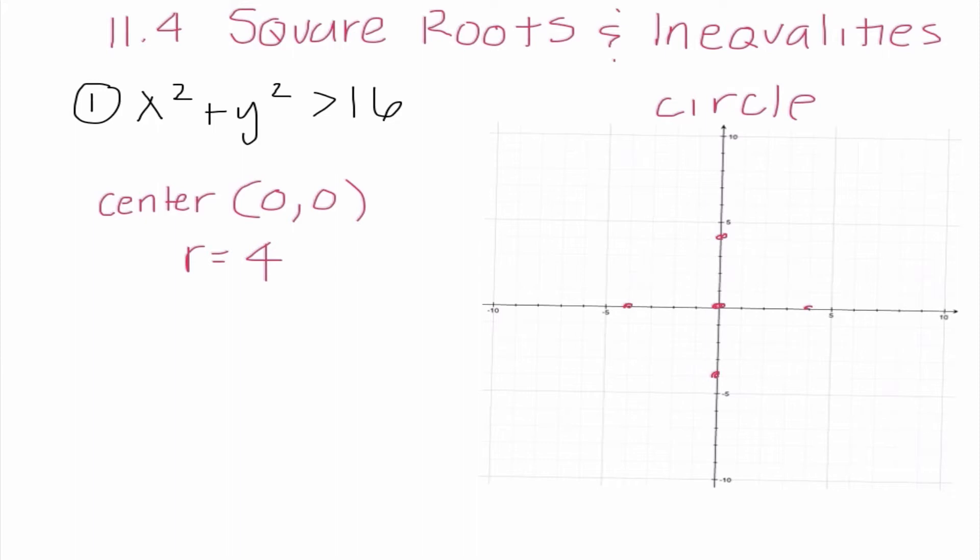And I need to determine at this point, should my circle be solid or dashed? And since I have this inequality that is not equal to, I know that my circle is going to be dashed. So there we go. It's a lovely circle. Now I need to figure out where should I shade. And when we had a line, we really either shaded to the right of the line or to the left of the line. If I have a circle, my two options are either inside the circle or outside the circle.